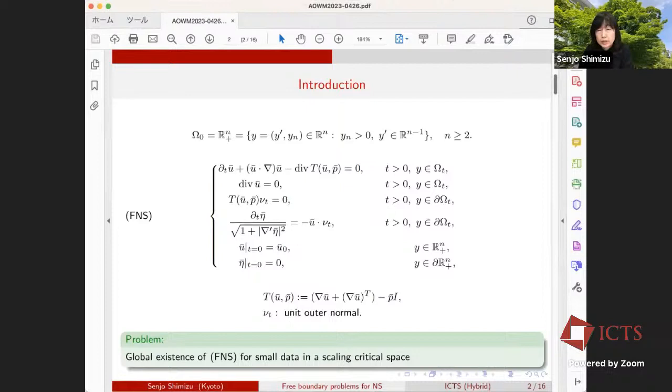Let omega-0 be the initial domain. It is equal to Rn plus, the half space, where n is greater than or equal to 2. We can also consider the initial domain such that for a given function eta not of y', namely, yn is greater than given function eta not of y'. Today, for simplicity, I consider the initial domain is the half space Rn plus. It is considered that the initial domain is filled with fluid. So, physically, we take positive direction of y downwards.